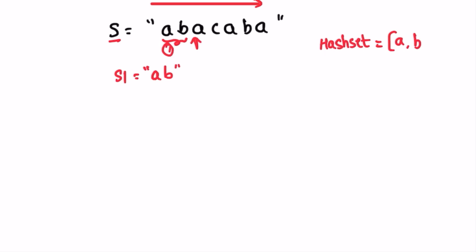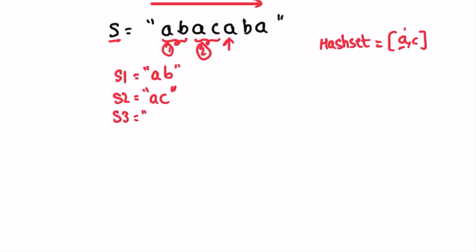We start the second substring from the current character. Whenever we start a new substring, we clear the HashSet so we can compare fresh. 'a' is not present in the cleared HashSet, so we add it. Moving to the next character 'c' — 'c' is not present in the HashSet, so we add it to the substring and the HashSet. The next character is 'a' — 'a' is present in the HashSet, so this ends our second substring.